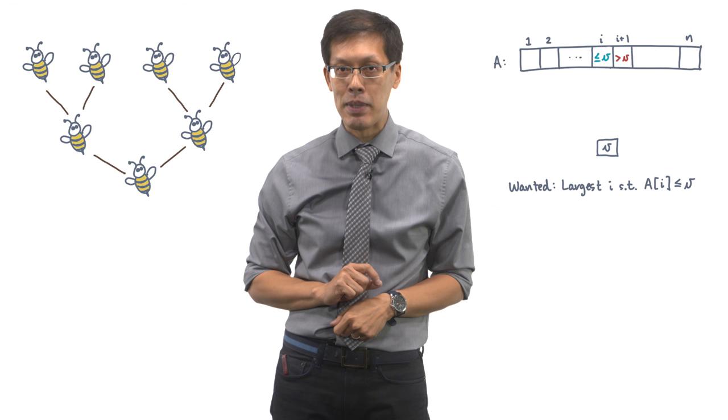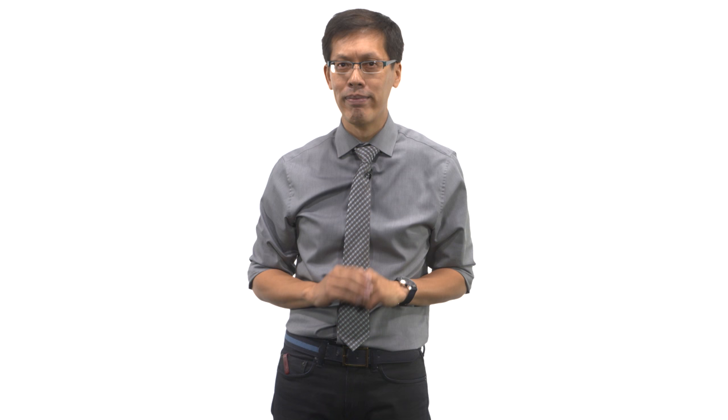But B-trees have a problem too. You need to tune that B parameter in a machine-specific way which affects portability. So this leads us to a really interesting question.